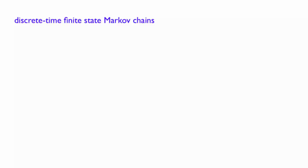Let us now abstract from our previous example and provide a general definition of what a discrete time finite state Markov chain is.